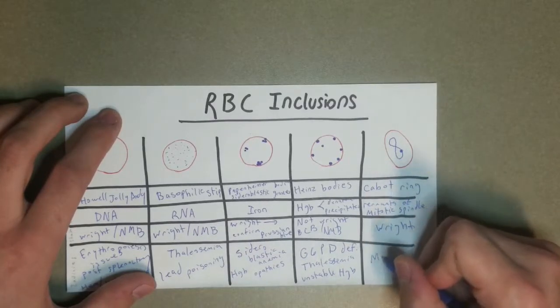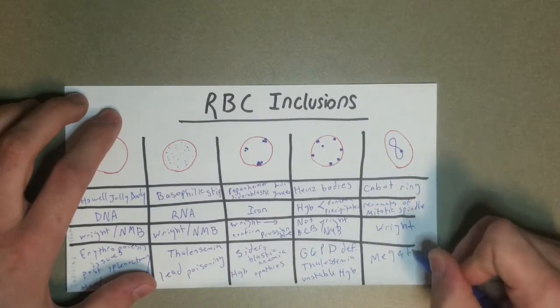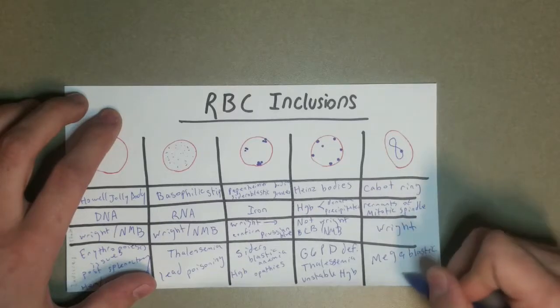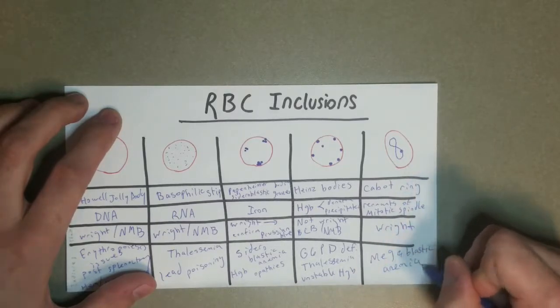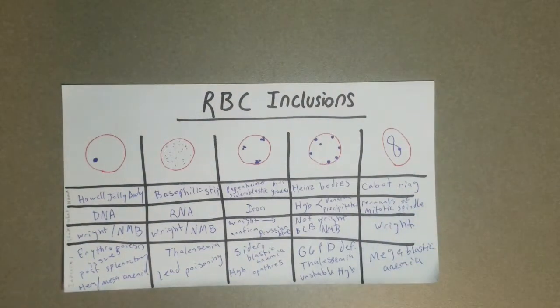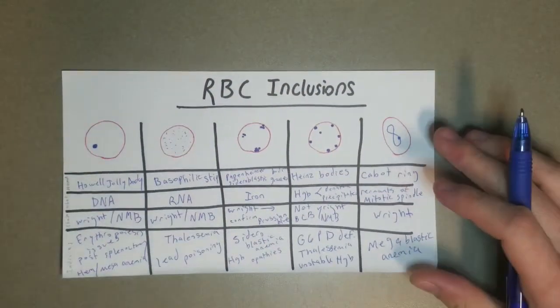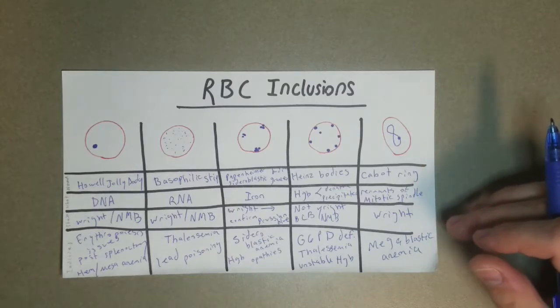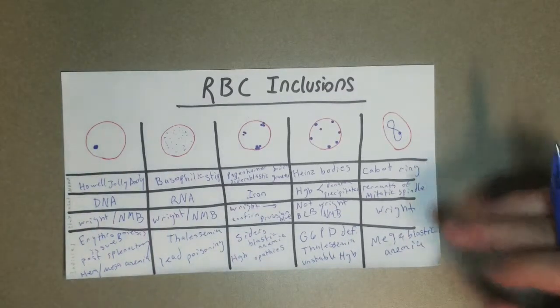You're going to want to see these on a Wright stain, and that's how you'll see them best. And they're pretty limited to a megaloblastic anemia. So you're not going to see them in too many other things like that. They're pretty rare. You might not ever even see one. You might see one on cell vision, it's possible, if you're doing kind of a high-volume situation there.